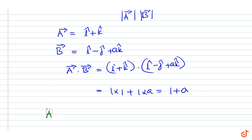Now modulus of vector A equal to modulus of i plus k equal to 1 squared plus 1 squared square root, equal to root 2.